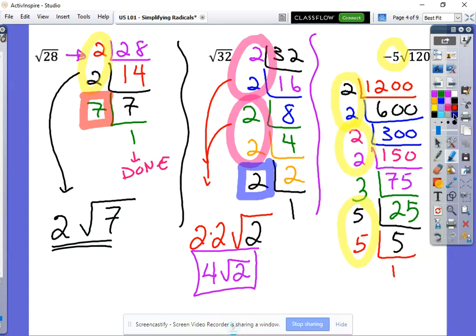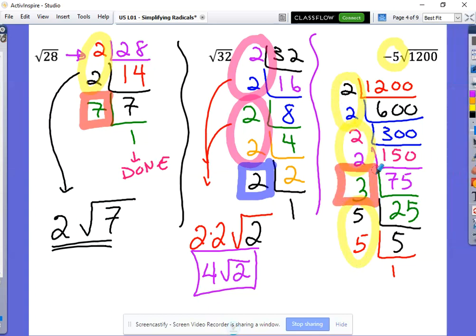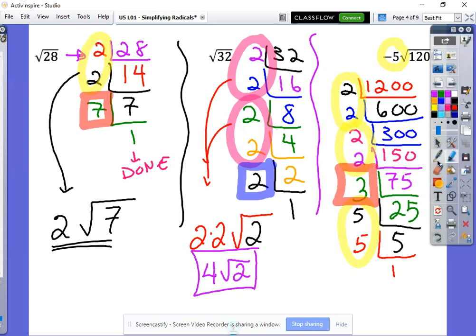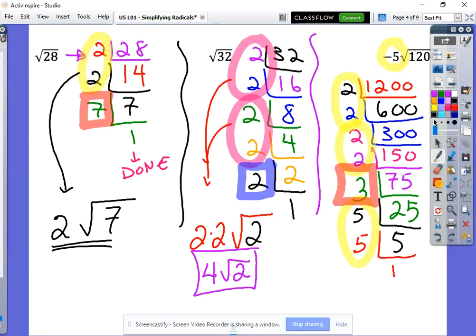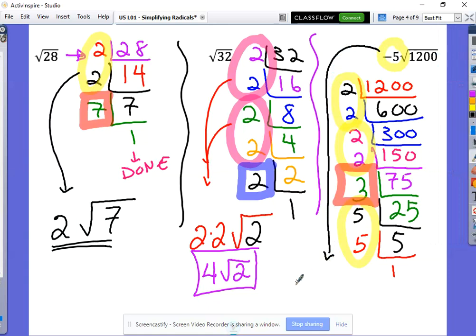So we come back to it, let's find our pairs. Pair of twos, pair of twos, pair of fives and singles. Our single guy is right there, that three. So if we're going to write all this out, it's going to take a second, but let's think about what we have. Let's first of all remember that we have this negative five from the very beginning, so negative five is still there.